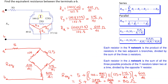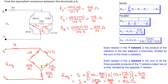Instead of the upper delta, we can also apply a delta to Y transformation to the lower delta of resistors. Again applying the principle that each resistor in the Y network is the product of the resistors in the two adjacent delta branches divided by the sum of the three delta resistors. So Rx is given by 25 times 40 divided by the sum of the three delta resistors, and Ry and Rz can be found similarly. Using this transformation, the circuit can be redrawn.